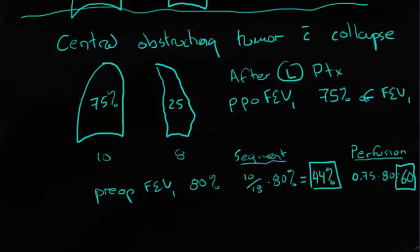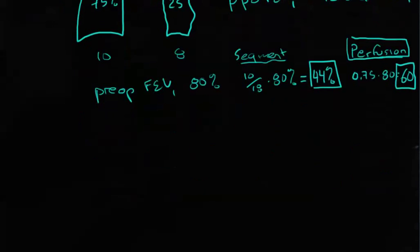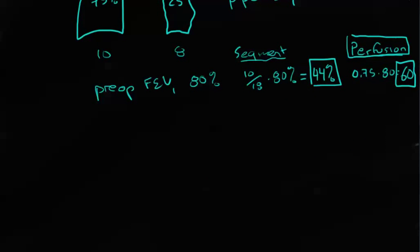You can see the big difference here calculating with segmental versus perfusion. So in patients who have a centrally obstructing tumor, or even any obstructing tumor, you're going to want to choose the perfusion method over the segment method so you can get a much more accurate assessment of what's going to be left. You can even use the perfusion method to calculate the predicted postoperative FEV1 after a lobectomy.